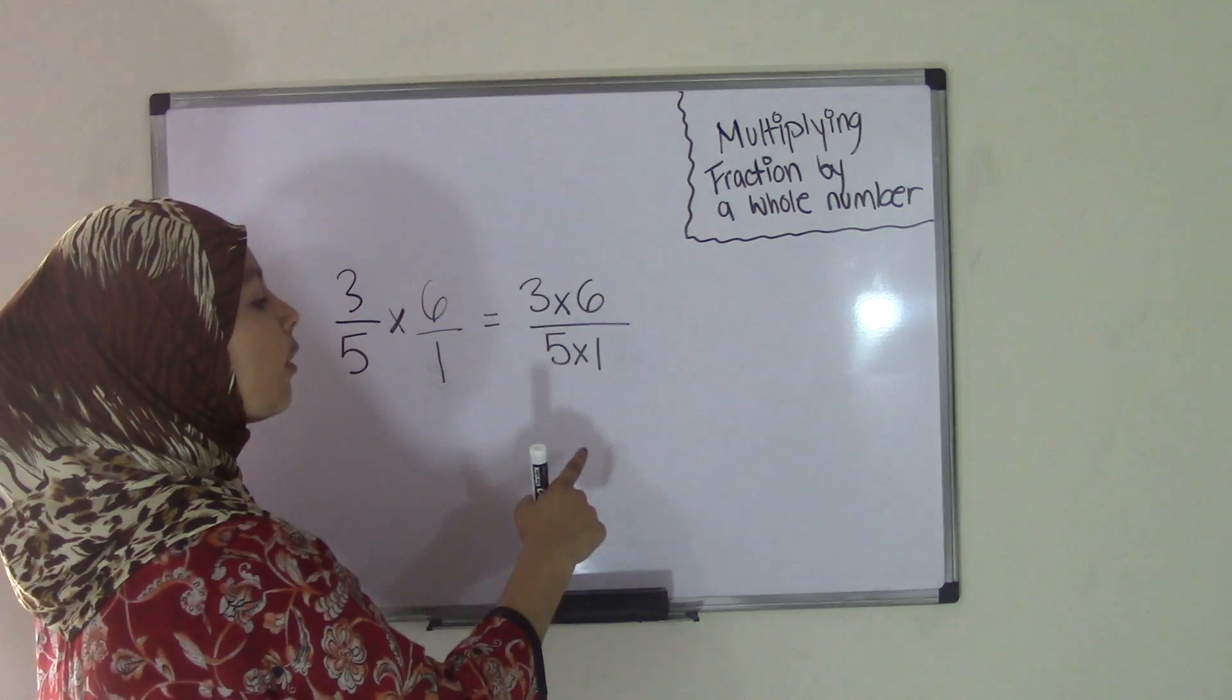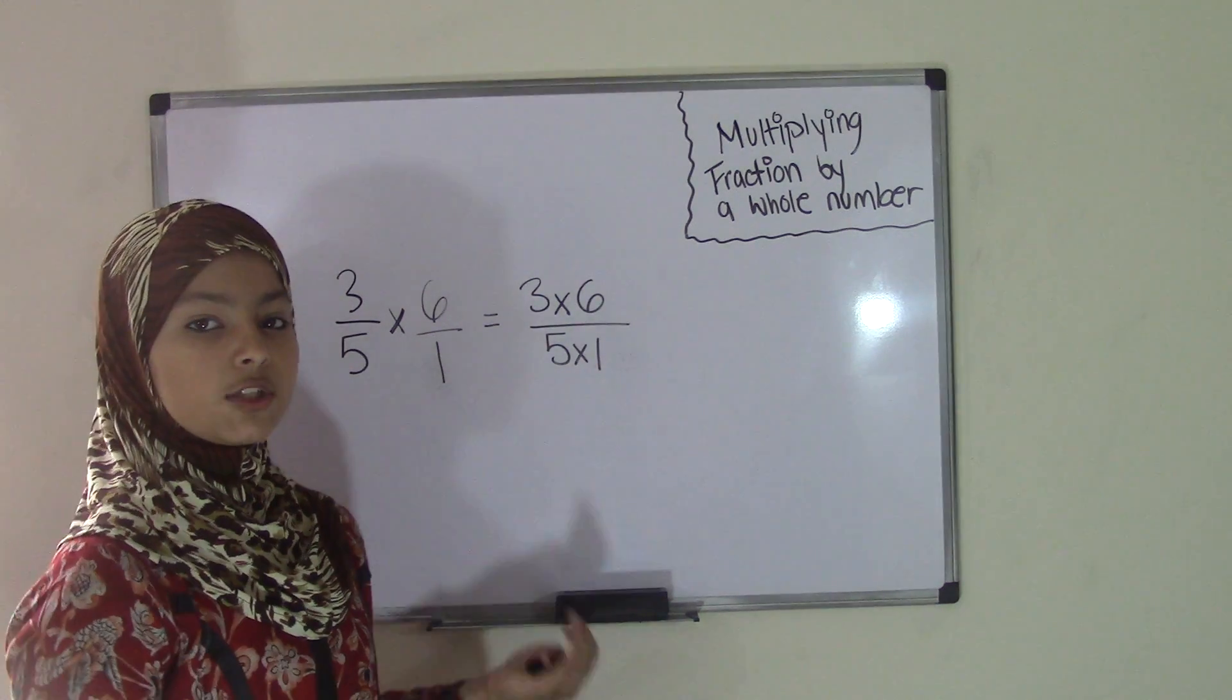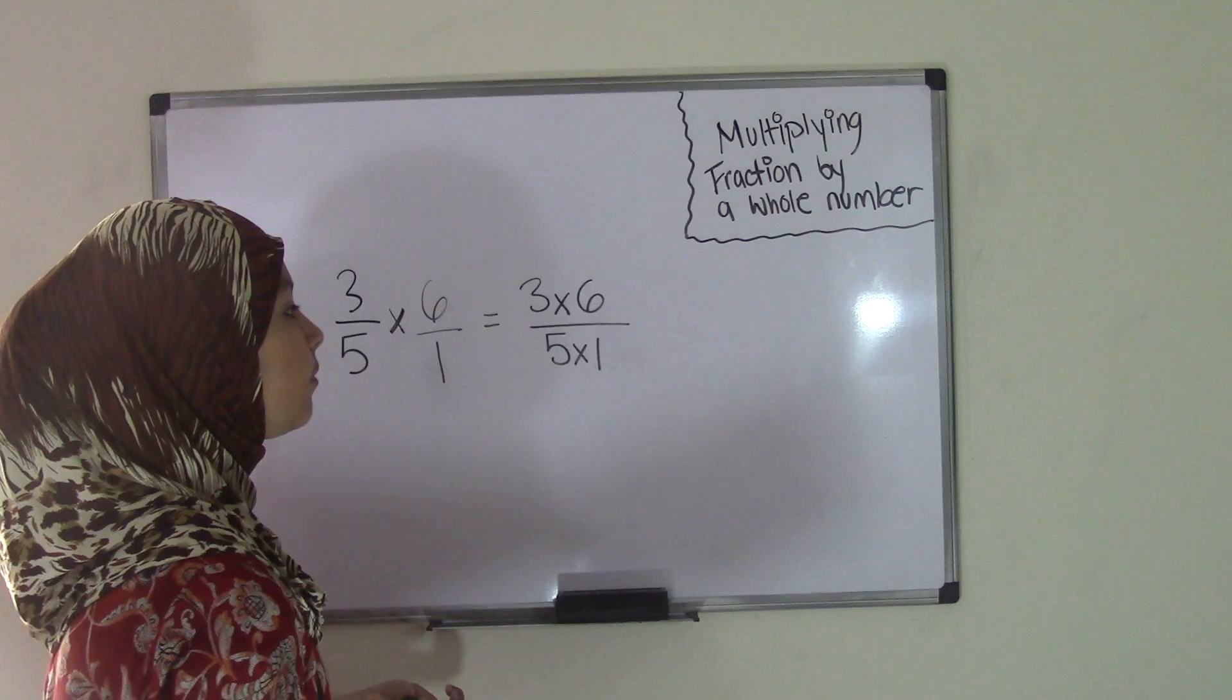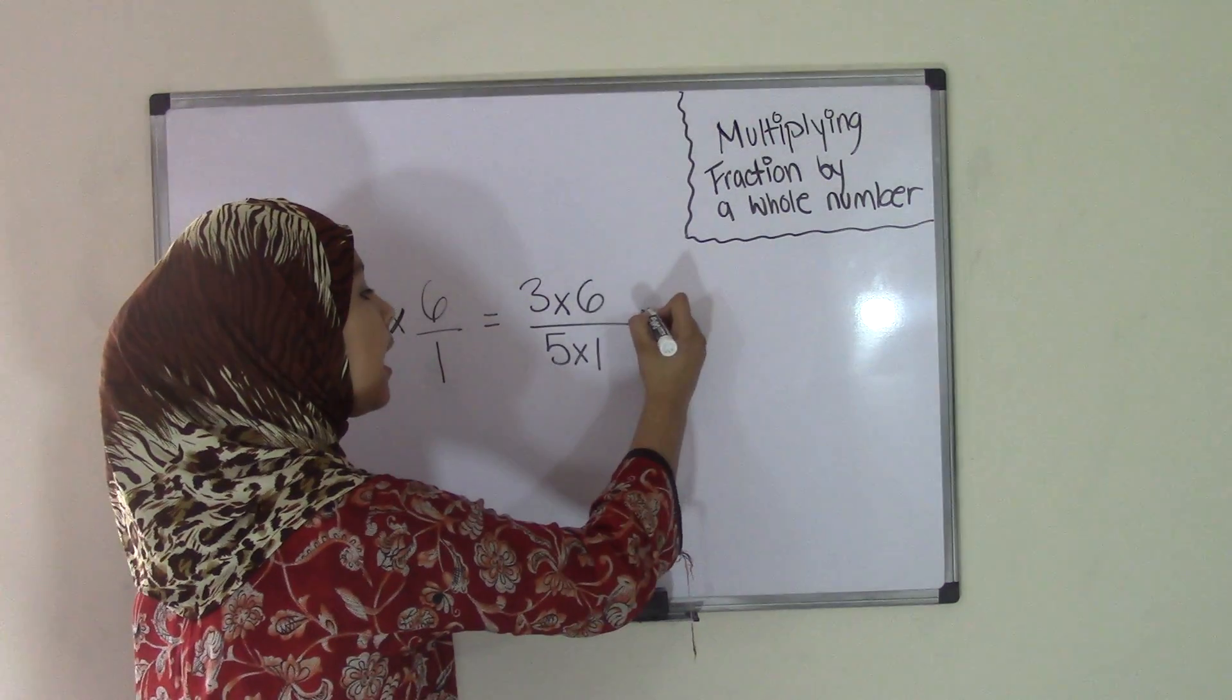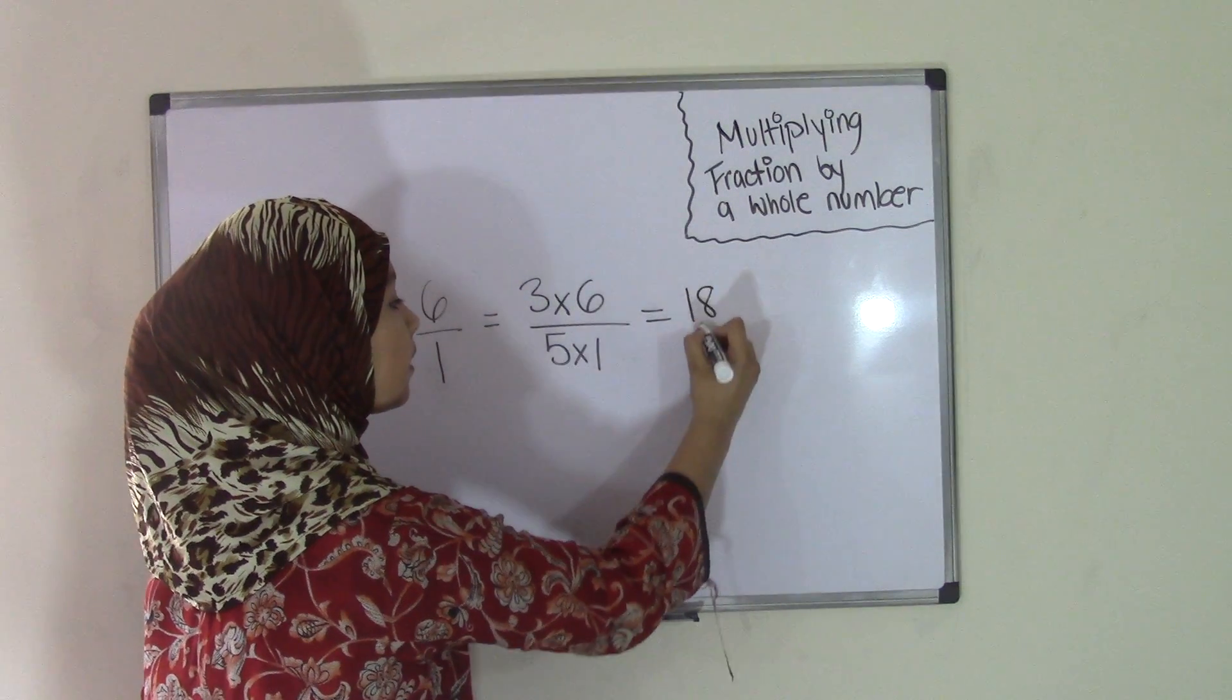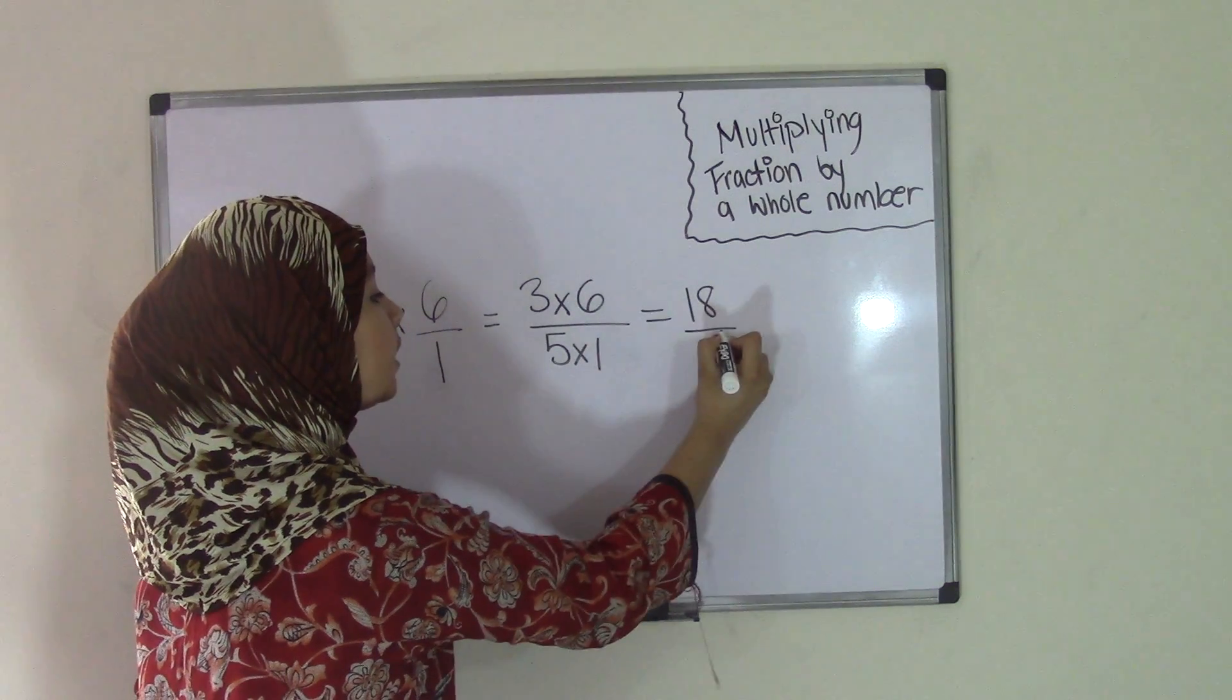So you have 3 times 6 over 5 times 1. Now this is just simple multiplication, so we all know that 3 times 6 equals 18 and 5 times 1 equals 5.